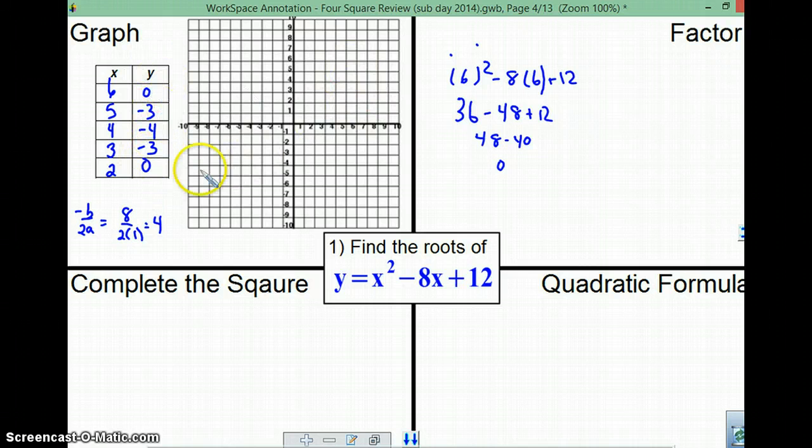Okay. So, now we're going to plot our points. So, we go to 4, negative 4, 3, negative 3, 2, 0, 5, negative 3, 6, 0. Make a nice graph.